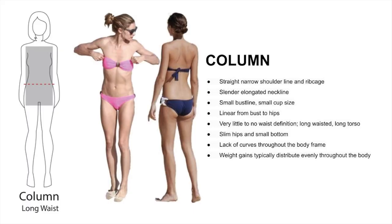Here are the key features of the column shape: straight, narrow shoulder line and rib cage, slender elongated neckline, small bust and small cup size. Straight from bust to hips with very little to no waist definition. Long-waisted with a long torso, slim hips and small bottom. Lack of curves throughout the body frame. Weight gain is typically distributed evenly throughout the body.